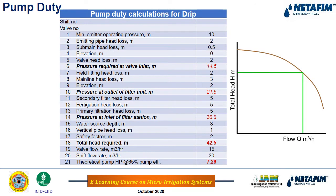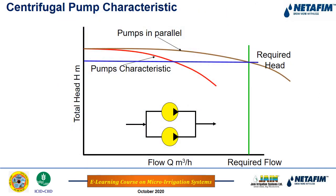The pump duty details the total head breakdown with all parameters considered: minimum emitter operating pressure, frictional head loss in the emitting pipe, sub-main head loss, elevation differences, mainline head loss, field fittings, secondary and primary filter head losses, fertigation equipment, water source depth, and frictional head losses in the vertical pipe of the pumping system. The discharge must also be specified to select the right pump set.